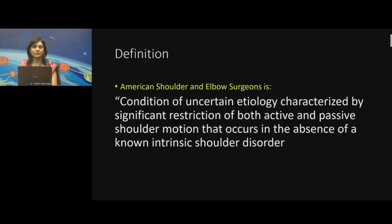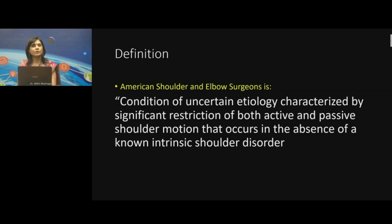To define adhesive capsulitis, it is a condition of uncertain etiology characterized by varying degrees of pain and significant restriction of both active and passive shoulder motion that occurs in the absence of any known intrinsic shoulder disorder. There is persistent disagreement about whether the underlying pathology of adhesive capsulitis is inflammatory, a fibrosing condition, or an algoneurodystrophic process. Evidence does suggest that there is a global synovial inflammation followed by capsulofibrosis in which type 1 and type 3 collagen gets laid down with subsequent tissue contraction.